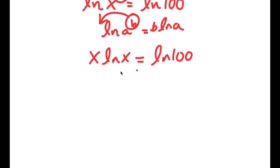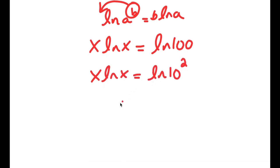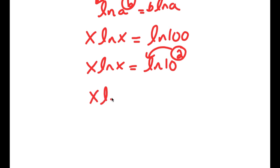Now ln 100 is the same thing as ln of 10 squared. So I get x times ln x equals ln 10 squared. And if I have something in the form ln a to the power of b, I can move 2 to the front. So I get x times ln x equals 2 times ln 10.